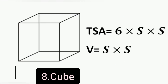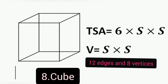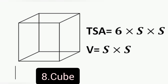Number 8: Cube. Cube is a three-dimensional solid object bounded by 6 square faces, having 12 edges and 8 vertices. Surface area of cube is equal to 6 times side squared. Volume is equal to side times side times side.